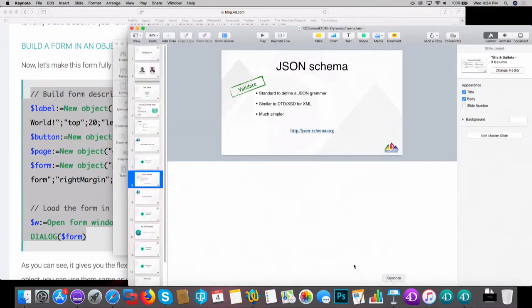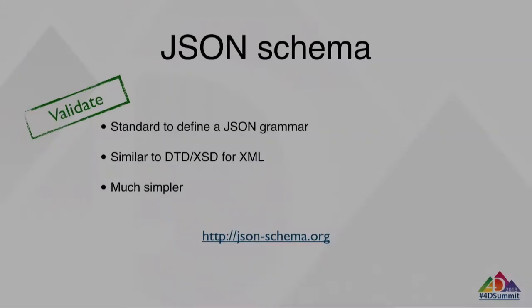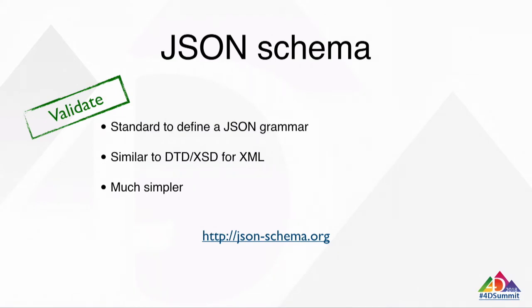JSON Schema. Because it's so easy, it's also easy to make mistakes - because of the syntax, property names, and property values. We needed a way to validate what you are typing. For this, we are using a standard called JSON Schema. It's very similar to what you may already know - DTD or XSD for XML. It's like the grammar for XML but in JSON format. And personally, I find it much simpler than XML.